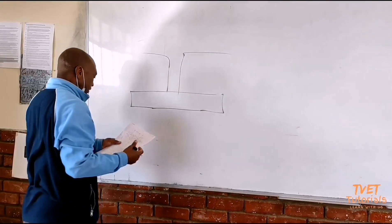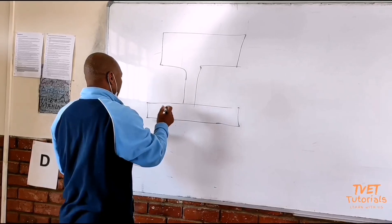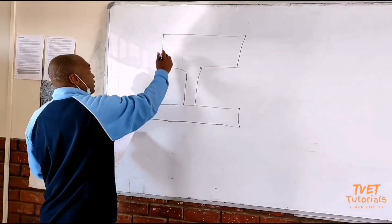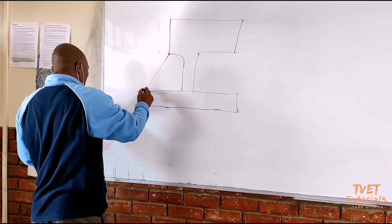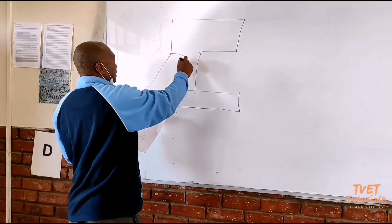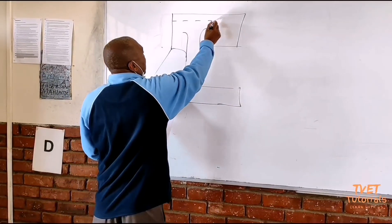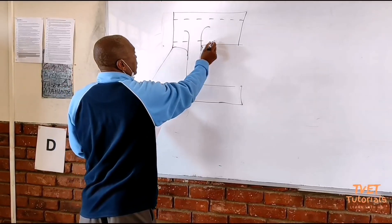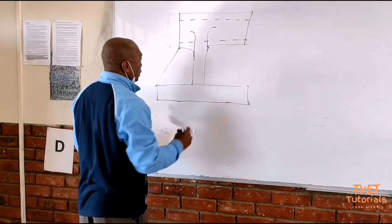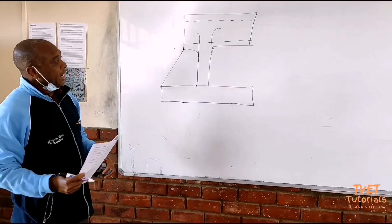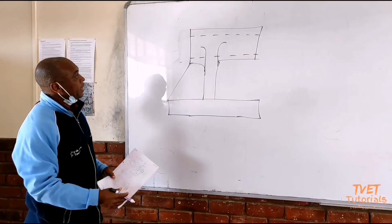This is your piece. It has got a support, and parts go inside on both sides. So when we draw item number one, it will be something of this nature — that is your front view of item number one.